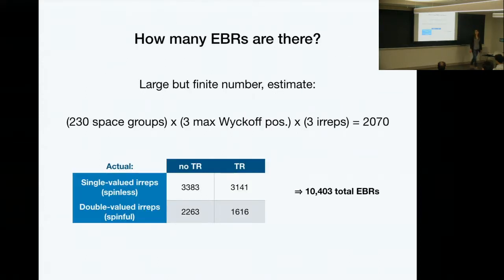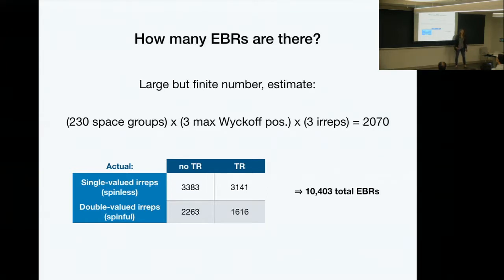That finite number is actually quite large. When we consider time reversal or no time reversal, and spin-orbit or no spin-orbit, the number turns out to be around 10,000. It's a large number — it's a problem that requires a computer — but it's still definitely a finite number.